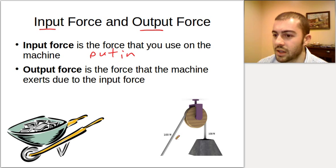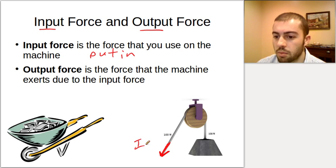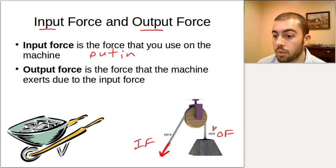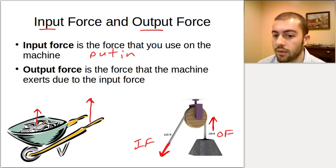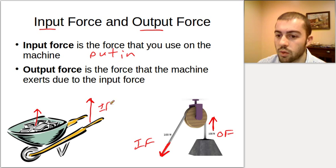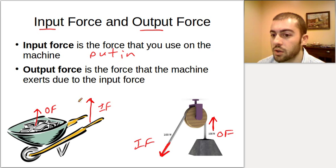With the pulley example, the input force is what we applied by pulling on one side of the rope, and the output force is the force going upward on the other side. With the wheelbarrow, the input force is us lifting up on the handle, and the output force is the actual force moving the weight of the load. So input is what you put in, and output is what you get out.